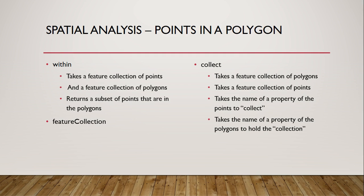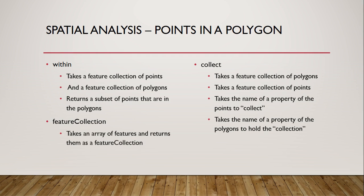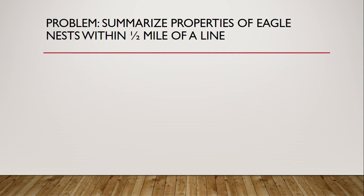There's also a helper method that we'll need — it's a constructor method for feature collections. It simply takes an array of features and turns them into a feature collection. We'll need this because the output of the buffer method is a single feature, but the collect method requires a feature collection as input. So we'll take that output of the buffer method and turn it into a feature collection that has only one feature. Now we can write a wrapper for the collect method that does all of this in one function.